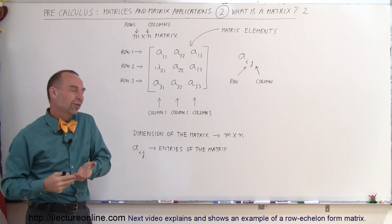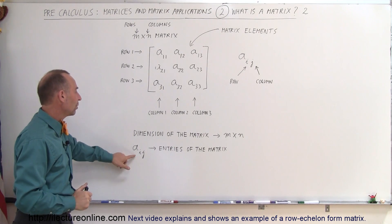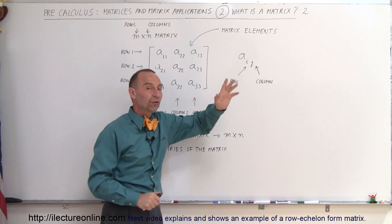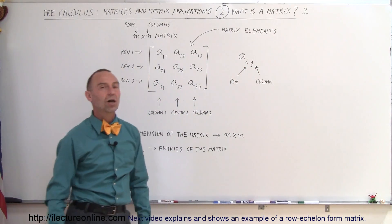We call them matrix elements, or sometimes we call them matrix entries or entries of the matrix. In general, we write A_ij, where i, the first number, is the row that we're in, and j, the second number, is the column that we're in.